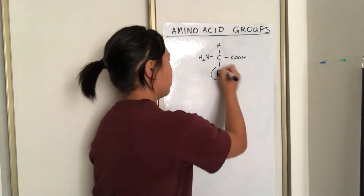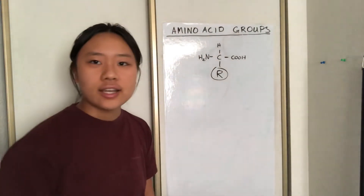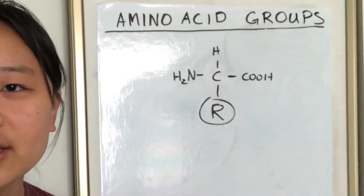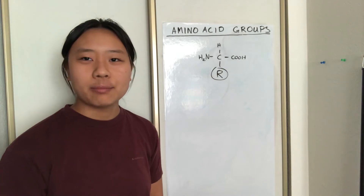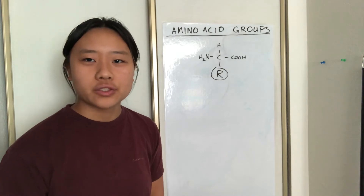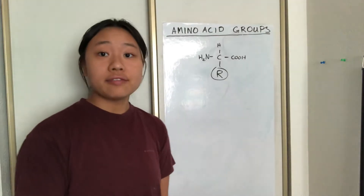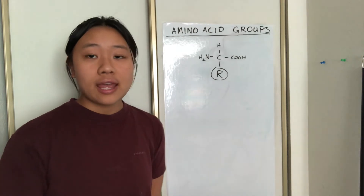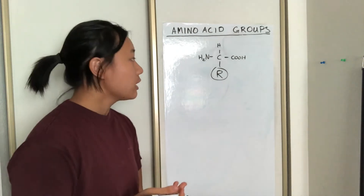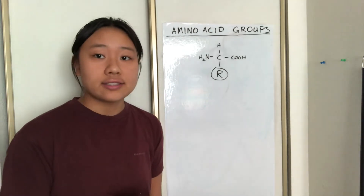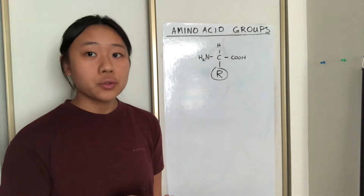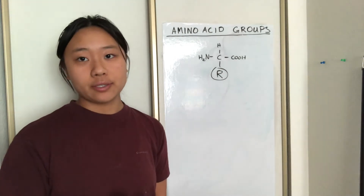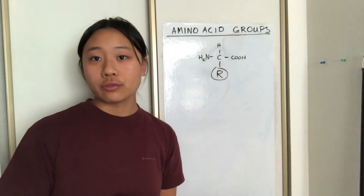Remember that R group, the side chain, the weird sibling in the family — the one that puts milk before cereal. They basically define the amino acid, they give the amino acid their properties, and the 20 amino acids are classified into different groups based on these properties, which we'll be going over today.